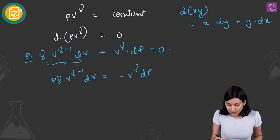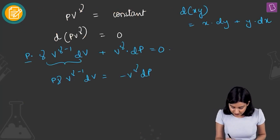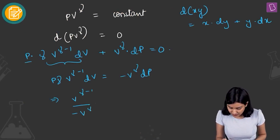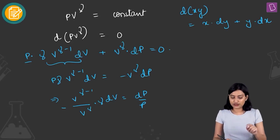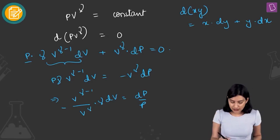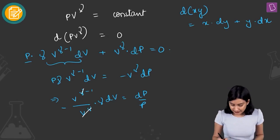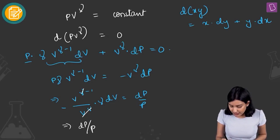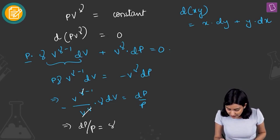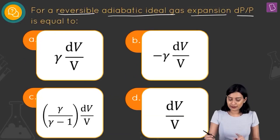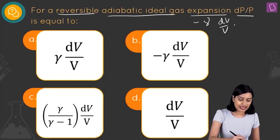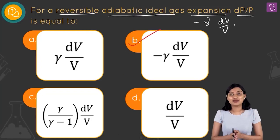Rearranging: P·γ·V^(γ−1)·dV = −V^γ·dP. Dividing both sides appropriately: V^(γ−1) / (−V^γ) · γ · dV = dP/P. The V^(γ−1) and V^γ terms cancel to give V^(−1), so: dP/P = −γ · dV/V. This matches option B, making option B the right answer.